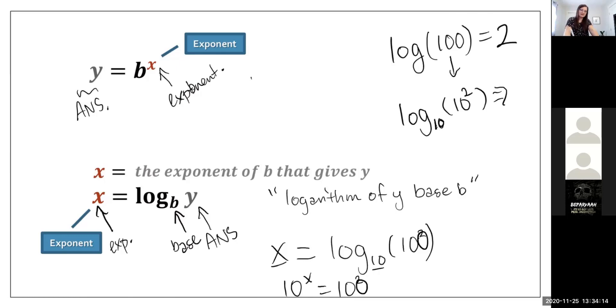So 10 to the power of what gives us 100. So if you try log of 1000, what do you think you should get? And again, that question is 10 to the power of what is 1000. Right. Because that is the exponent. 3. Yeah. Because 10 to the power of 3 is 1000.